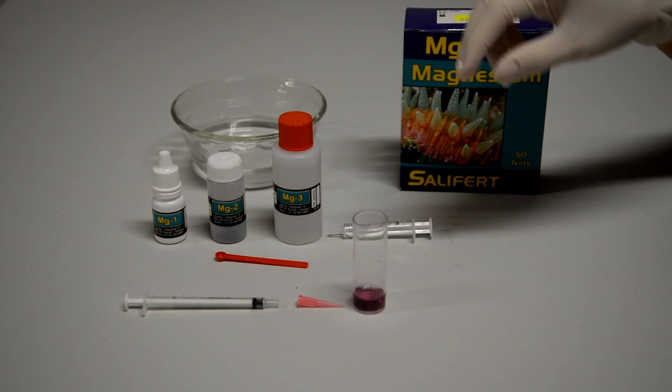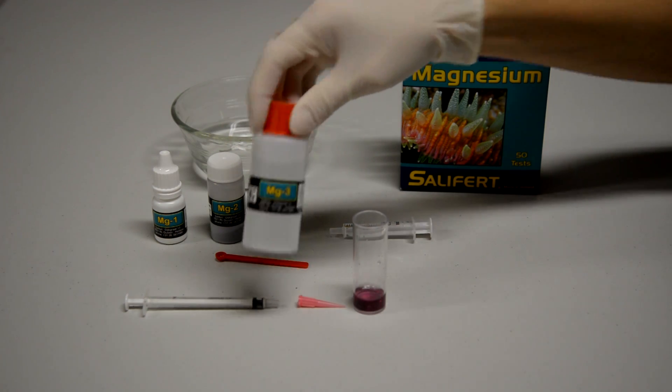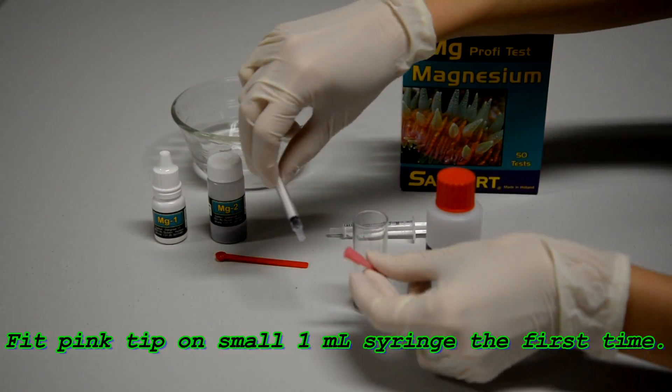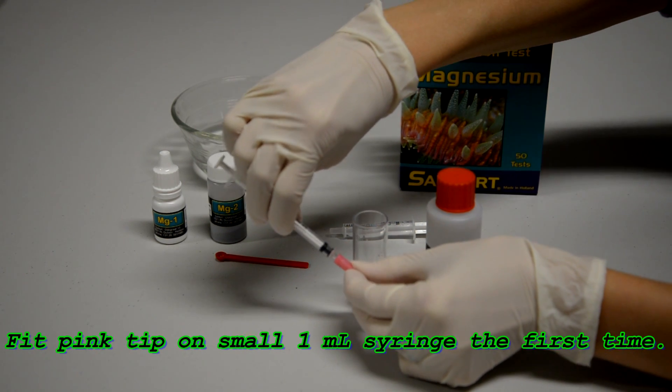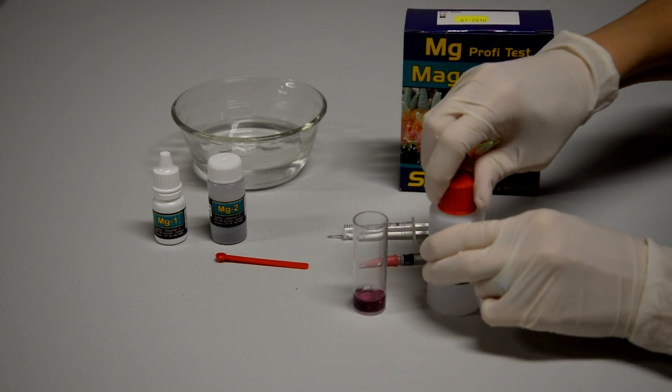So after that, we're going to put in magnesium 3. And for magnesium 3, they give us this special calibrated 1 ml syringe with a very fine pink tip that you want to put on. You only have to do that the first time.